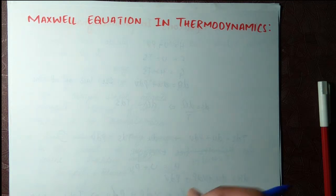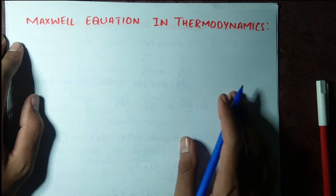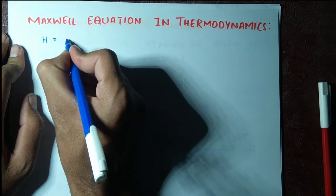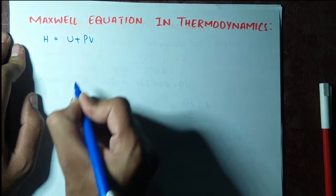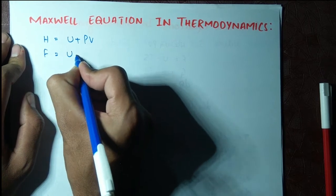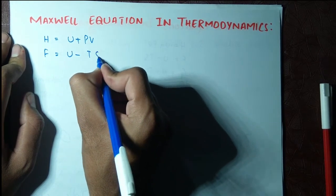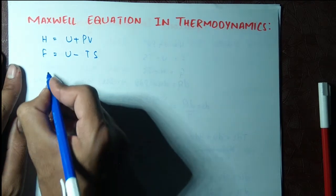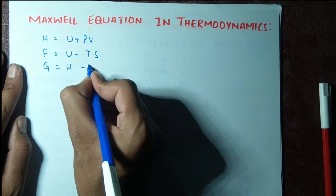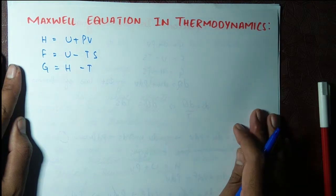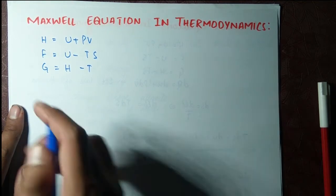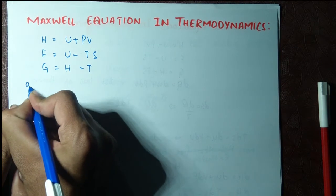Proceeding with a recap from previous lectures: enthalpy H is equal to U plus PV, the Helmholtz free energy F equals U minus TS, and the Gibbs free energy G equals H minus TS. These are the three thermodynamic potential equations we already talked about.